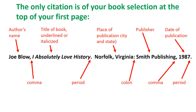You start with the author's name, followed by a comma, then the title of the book — anything published is either italicized or underlined — followed by a period. Then you have the place of publication, the city and state, followed by a colon, then the name of the publisher, then a comma, and then the year in which it was published, followed by a period. You can get all this bibliographic information in the first few pages of the book.